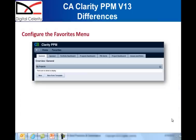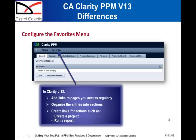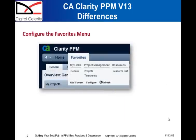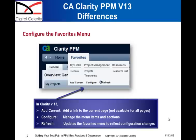In Clarity version 13, there's a new feature called the Favorites menu. The Favorites menu enables users to tailor their menu to improve navigation throughout Clarity. They can add links specific to things they do on a regular basis, organize entries into sections, and create links for actions such as creating a project or running a report. You access the Favorites menu by hovering over it, and then use the buttons at the bottom to add your current link, manage menu items and sections, and refresh the page.